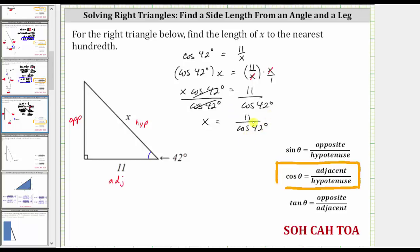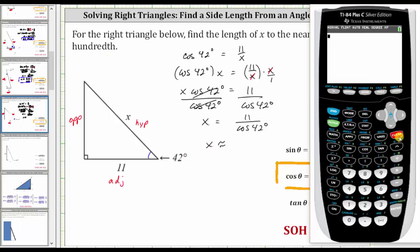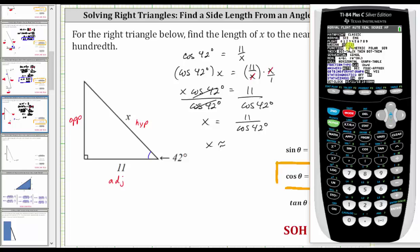From here, we need to go to the calculator and round this quotient to the nearest hundredth. Let's first make sure we are in degree mode by pressing the mode key, and notice how we are in degree mode. If we weren't, we would use the arrows to go down to degree and press enter.